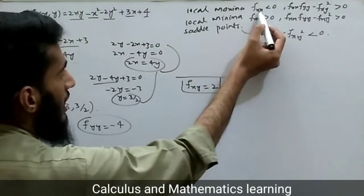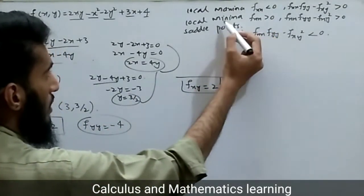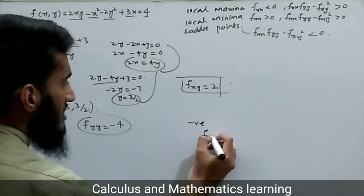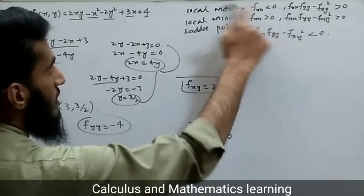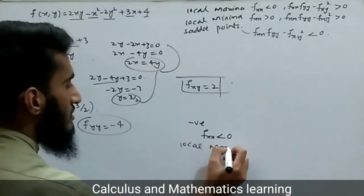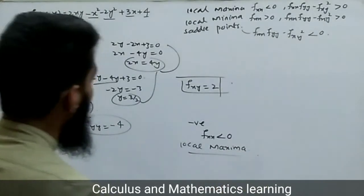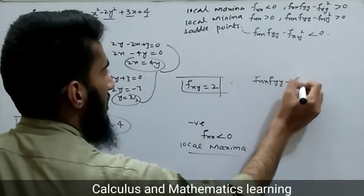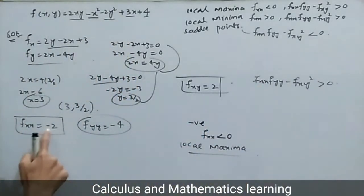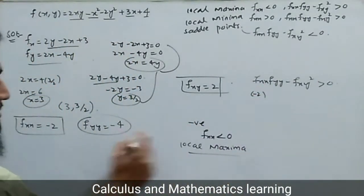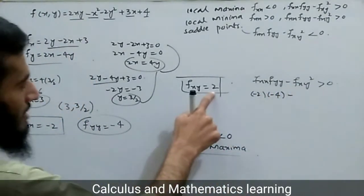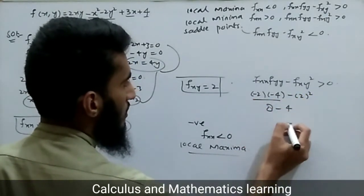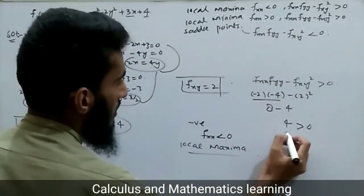Now applying the conditions: fxx equals minus 2, which is less than zero. This satisfies the condition for local maxima. Checking: fxx·fyy minus fxy squared equals minus 2 times minus 4 minus 2 squared equals 8 minus 4 equals 4, which is greater than zero. Both conditions for local maxima are satisfied.